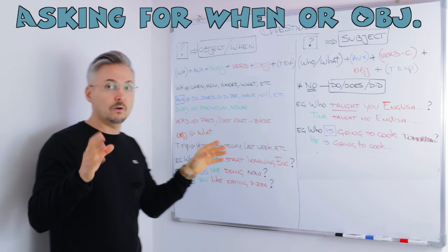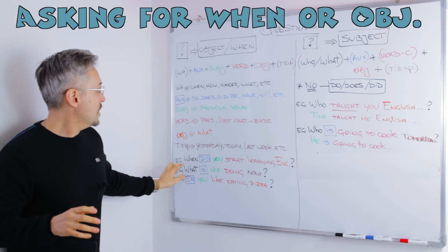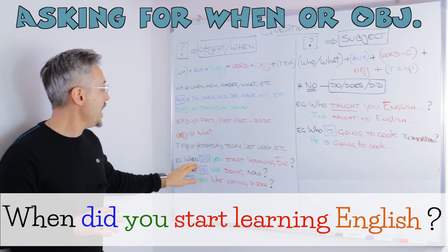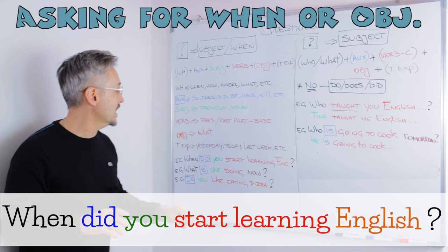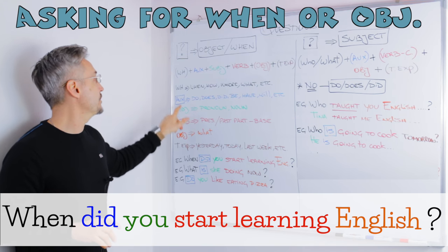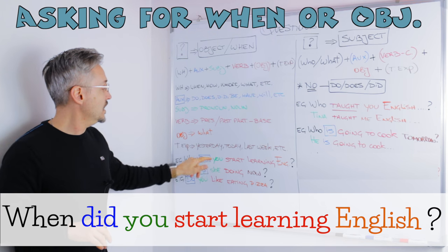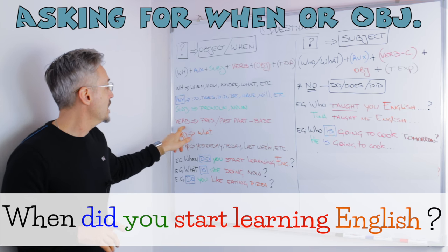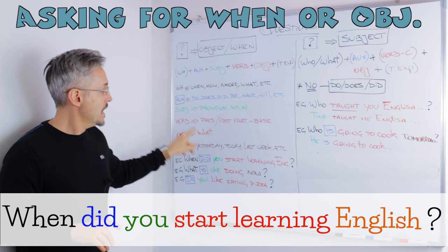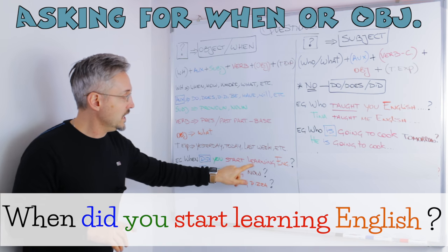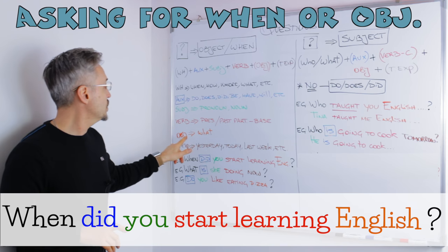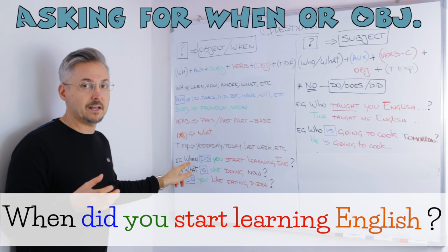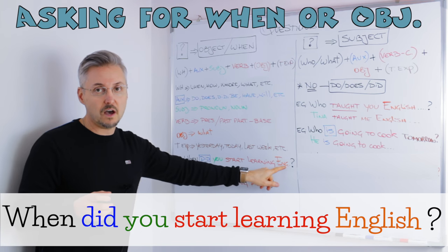Let me give you an example. When did you start learning English? Look at the auxiliary — it's shown in blue. 'Did' is the auxiliary. 'Start' is the base form of the verb. 'Learning' completes 'start learning.' 'English' is the object. Here we asked for when, that's why we need the object.